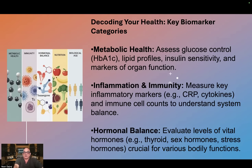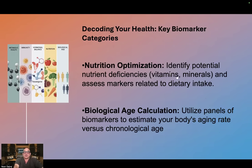Hormonal balance: evaluate levels of vital hormones — for example, thyroid, sex hormones and stress hormones — crucial for various bodily functions. Nutrition optimization: identify potential nutrient deficiencies such as vitamins like vitamin D and minerals, and assess markers related to dietary intake.